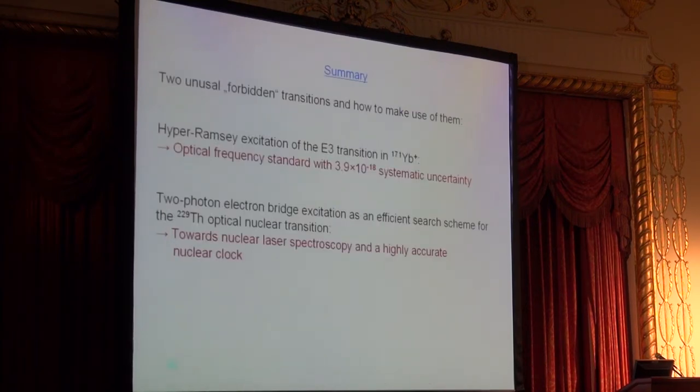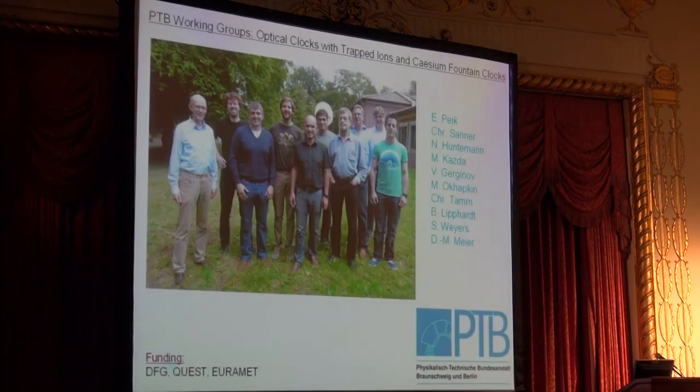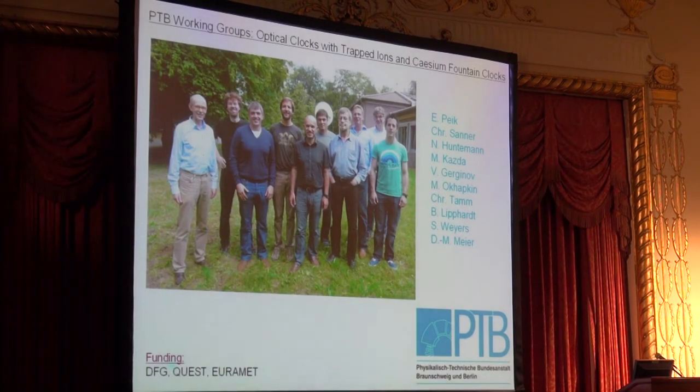With this, I'd like to conclude. I've spoken about two rather unusual forbidden transitions, but I hope I have shown you that this can actually be used especially for clocks. The hyper-Ramsey excitation of the octupole transition in ytterbium has allowed us to go towards very low systematic uncertainty, a very high accuracy clock. For the future, the nuclear excitation of thorium may promise even higher accuracy and, I think, applications in a new field between nuclear and atomic physics. With this, I'd like to close and acknowledge my co-workers at PTB. Thank you for your attention.